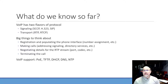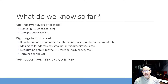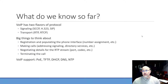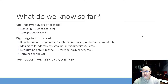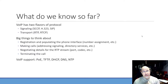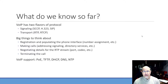When working with Voice over IP, there are two main kinds of protocols: the signaling protocol and the transport protocol. For signaling, we have SCCP or Skinny, H.323, and SIP. For transport, we have RTP, and then RTCP provides details about the RTP stream. You'll see lots of RTP packets with RTCP packets sprinkled in occasionally.